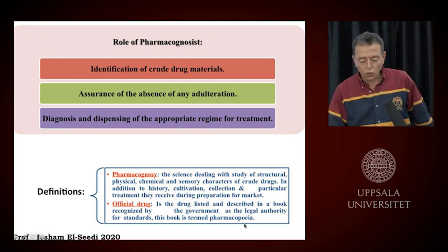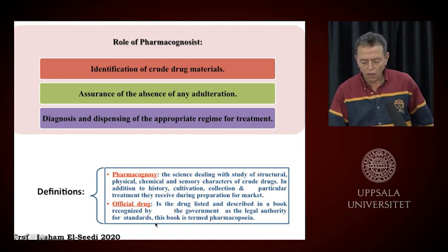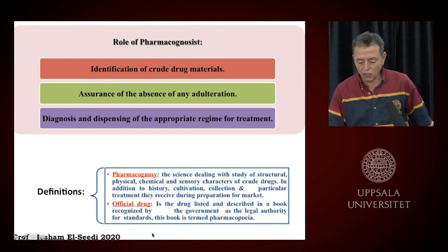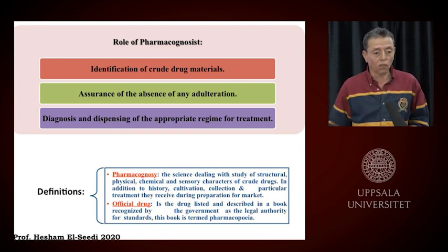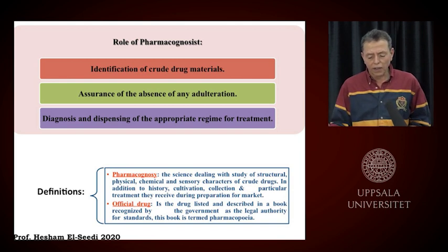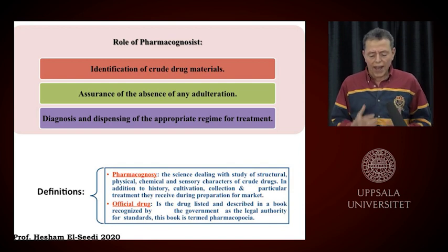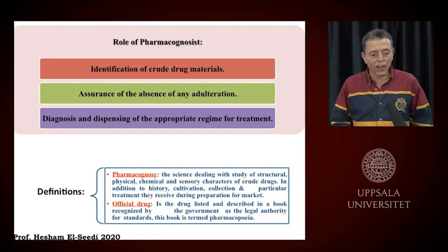From this point of view comes the official drug. It is a drug listed and described in a book recognized by the government as a legal authority for standards — this book is termed the pharmacopoeia. The pharmacopoeia means that you have passed all steps from identification of the plant material until you get the drug. If all these steps are based on scientific evidence and you provide scientific documents for every step, then the government will authorize this drug — and this is called pharmacopoeia.